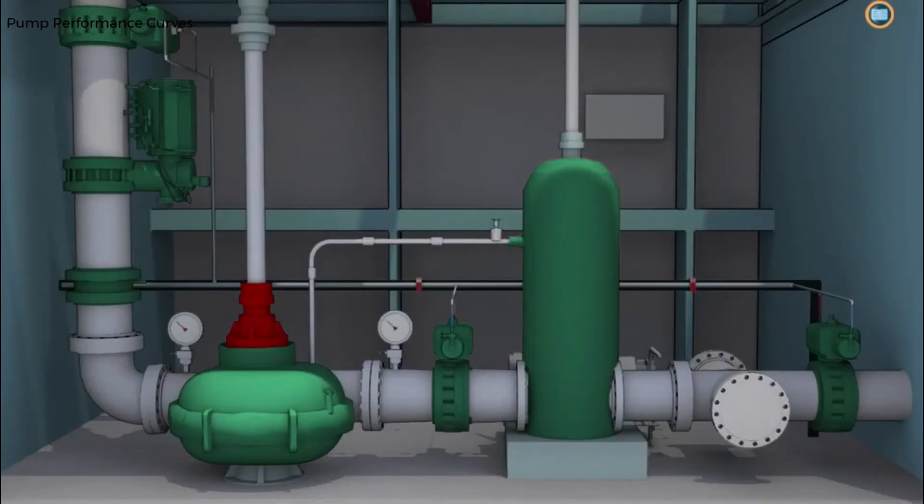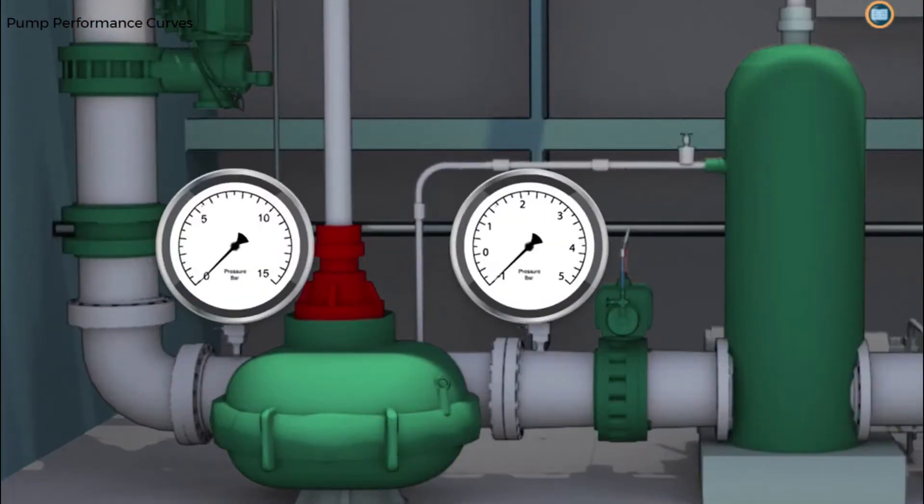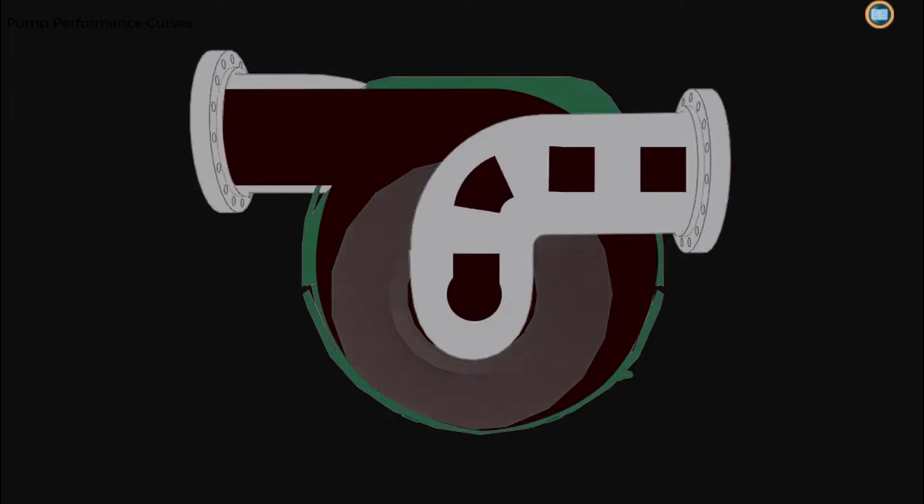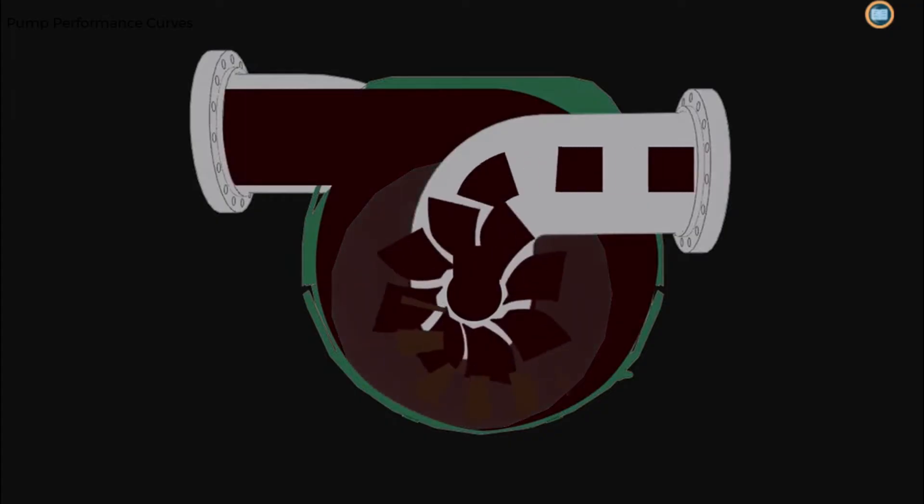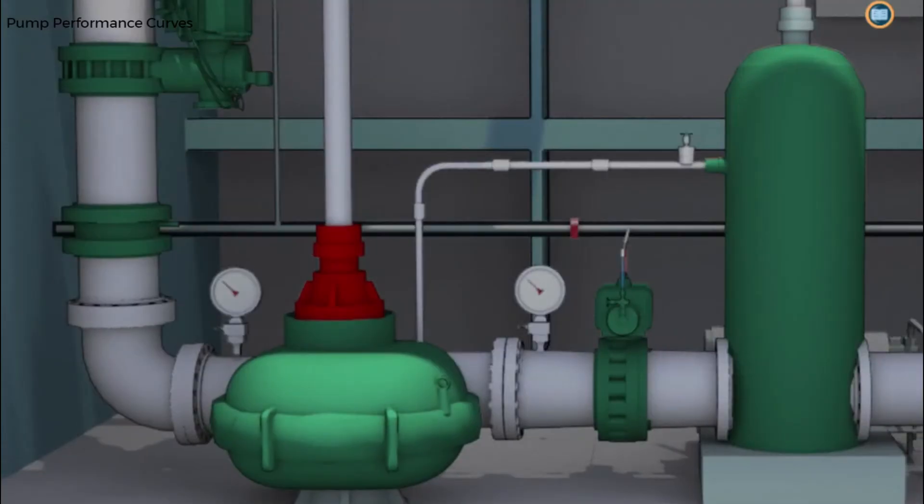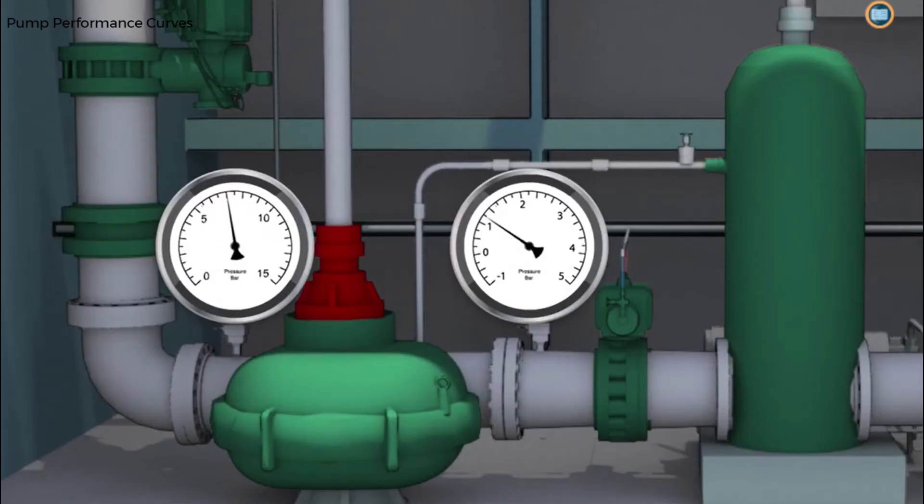Centrifugal pumps are used on crude oil tankers for the transfer of ballast and cargo as they can develop large flow rates. Let's take a look at how centrifugal cargo pumps work. As crude enters the pump, the rotating impeller speeds up the liquid. The crude then slows down as it passes through the narrow part of a spiral funnel shaped chamber called a volute. As the area of the volute increases, so does the pressure of the crude which results in the crude leaving the pump with increased pressure.